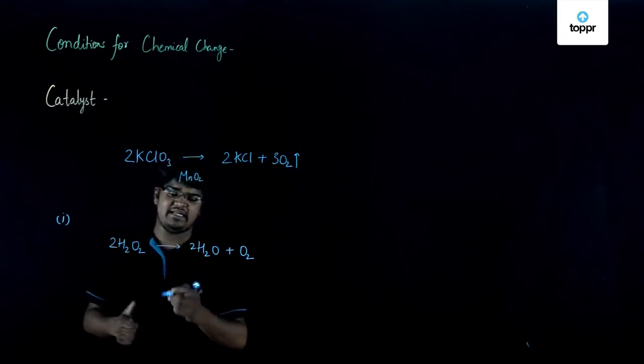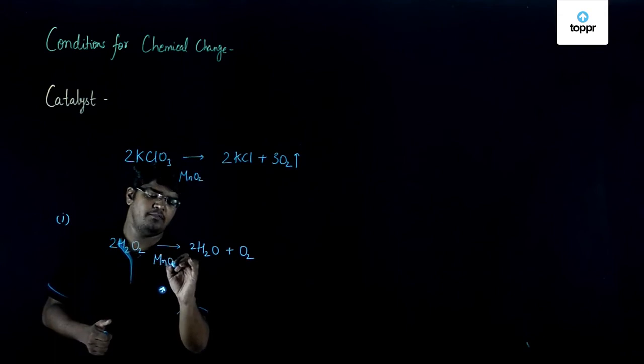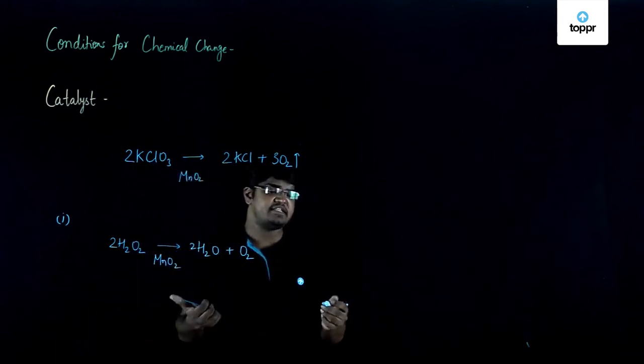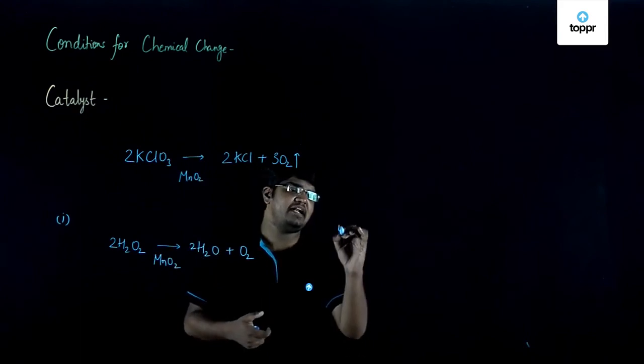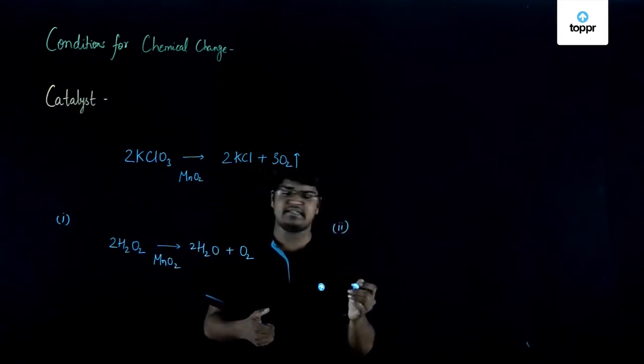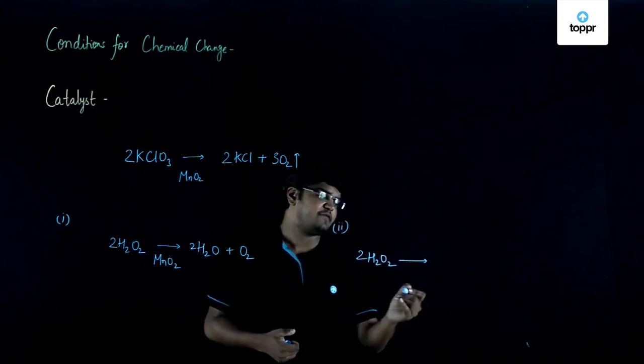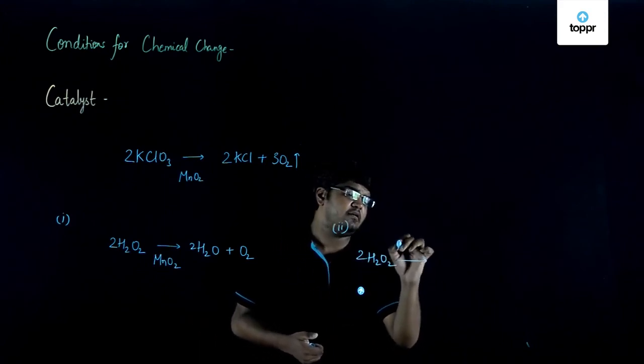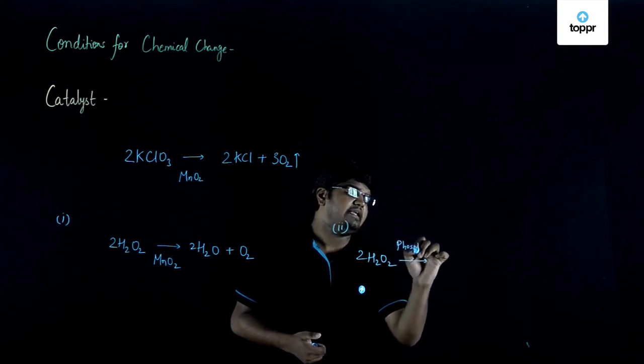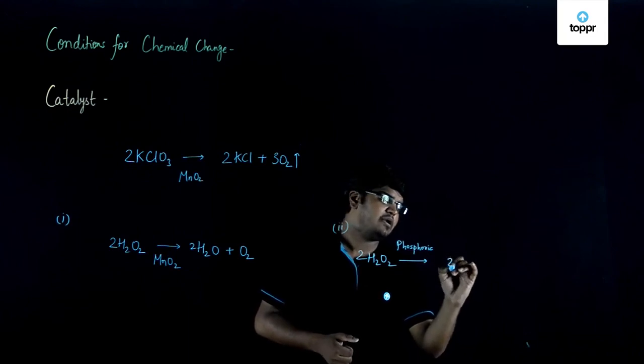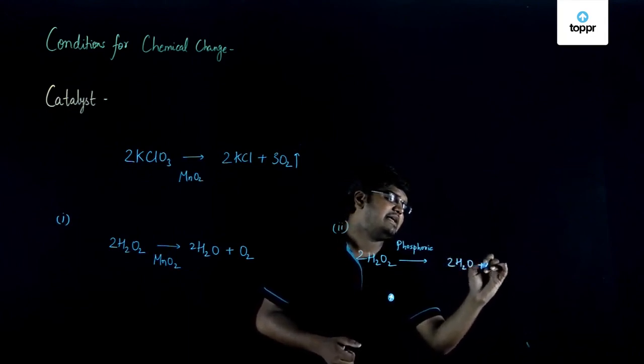But this reaction will be slowed down if the same reaction is carried out in the presence of a negative catalyst, which is phosphoric acid. So 2H2O2 in the presence of phosphoric acid will decompose at a much slower rate into water and oxygen.